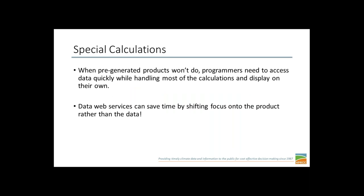Sometimes pre-generated products just won't do. Maybe SCASIS doesn't do a calculation that you need — that's where GIS and pre-generated products really aren't going to fill the gap. Programmers will need to access data quickly, but also need to be able to do these calculations and generate displays. This is where data web services can help save time by shifting your focus onto the product or special calculations rather than the data itself.